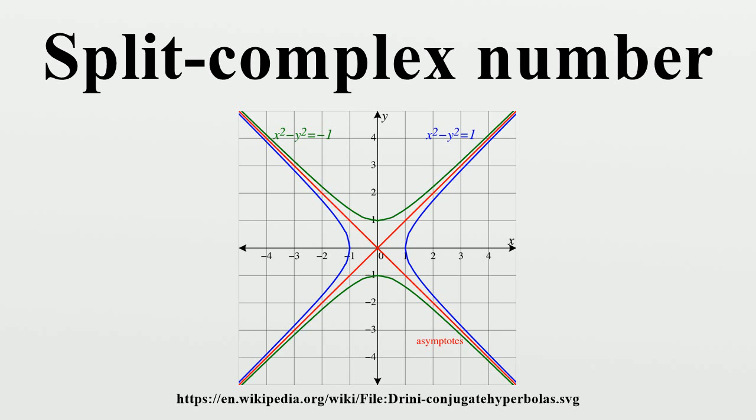The set of points {z: |z|²=r²} is a hyperbola for every non-zero r in R. The hyperbola consists of a right and left branch passing through ±r. The case r equals 1 is called the unit hyperbola. The conjugate hyperbola is given by {z: |z̄|²=-r²} with an upper and lower branch passing through ±jr.